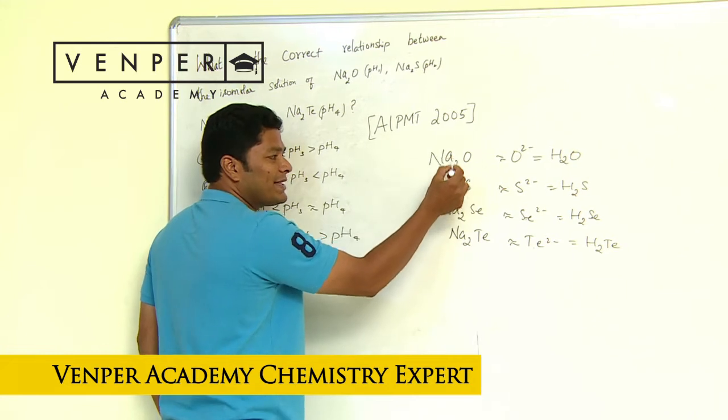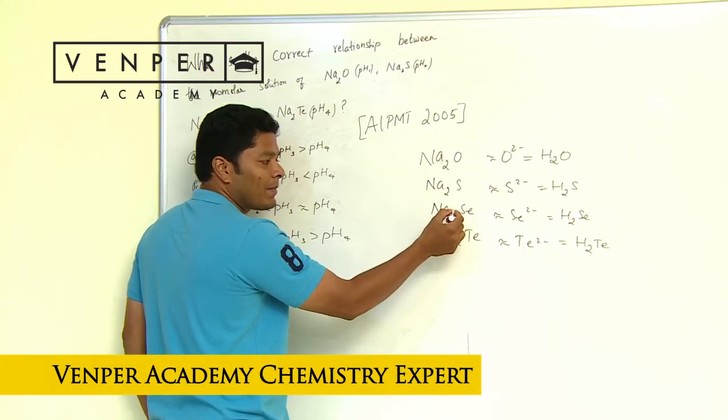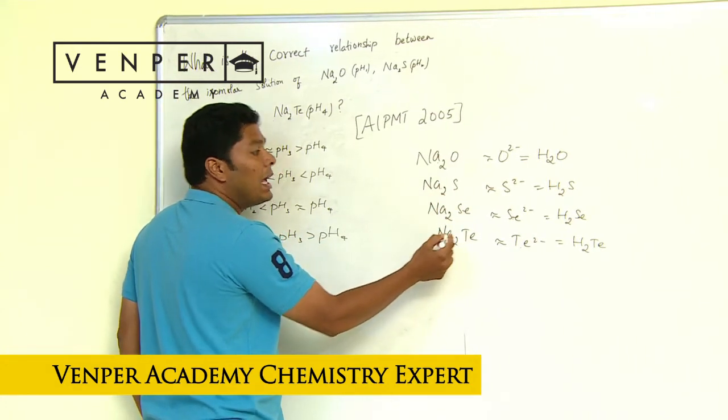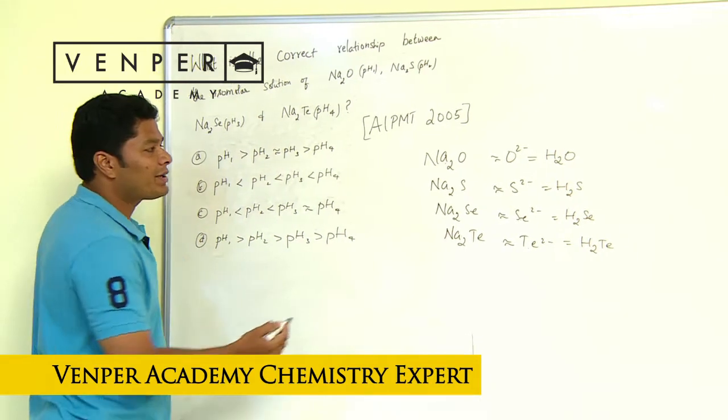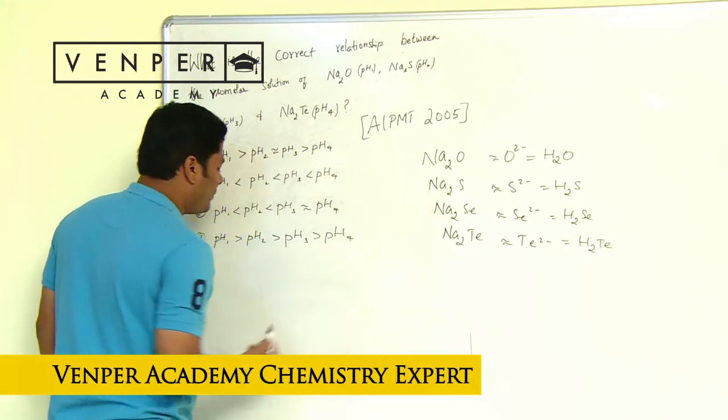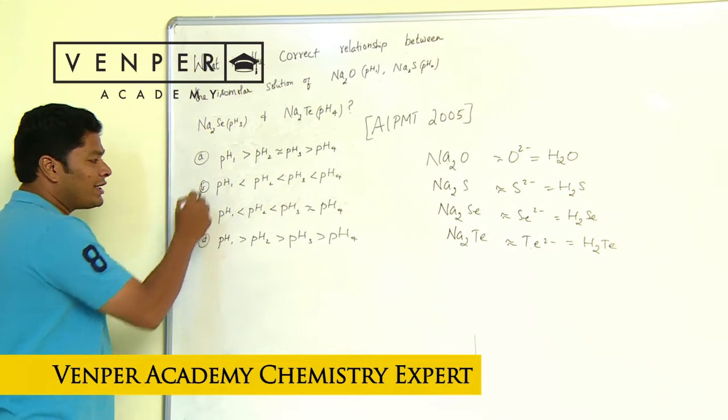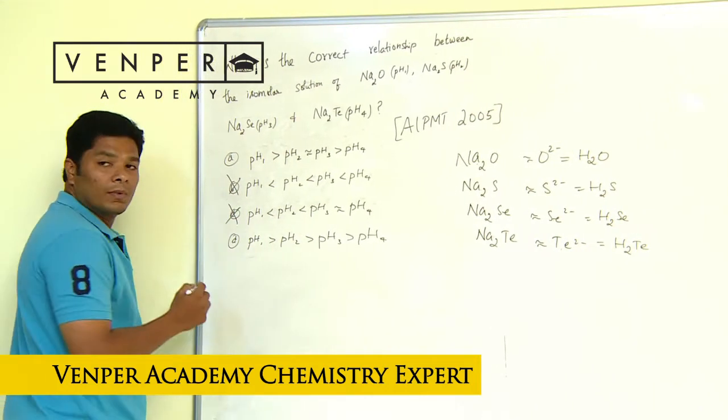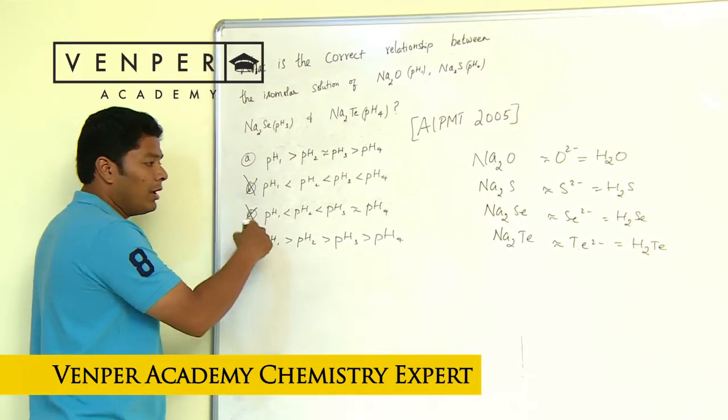That tells me this is more basic than this one, this is more basic compared to this, this is more basic than this. Higher the basicity, higher the pH. So Na2O should have the highest pH. Now that alone tells me this answer is wrong. This is what you do in NEET - first of all, eliminate.